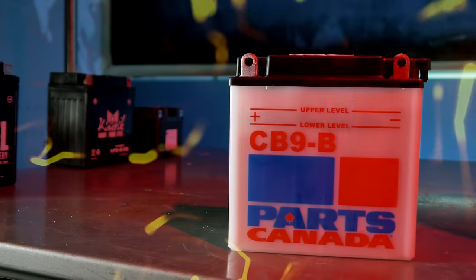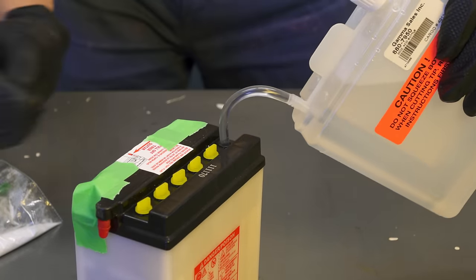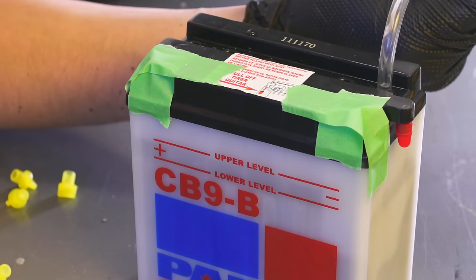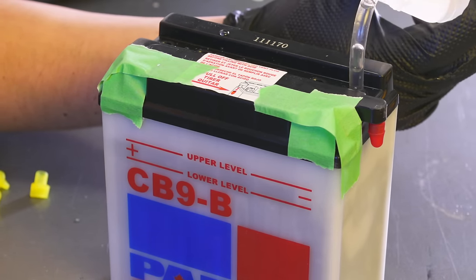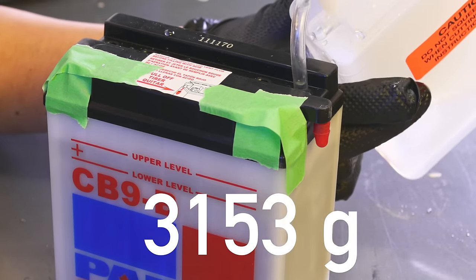Parts Unlimited offers a conventional battery. The convention, now 150 years old, is to flood lead plates with acid. A cheap method that cost me 40 bucks, another 5 in sulfuric juice, and 3,153 grams.